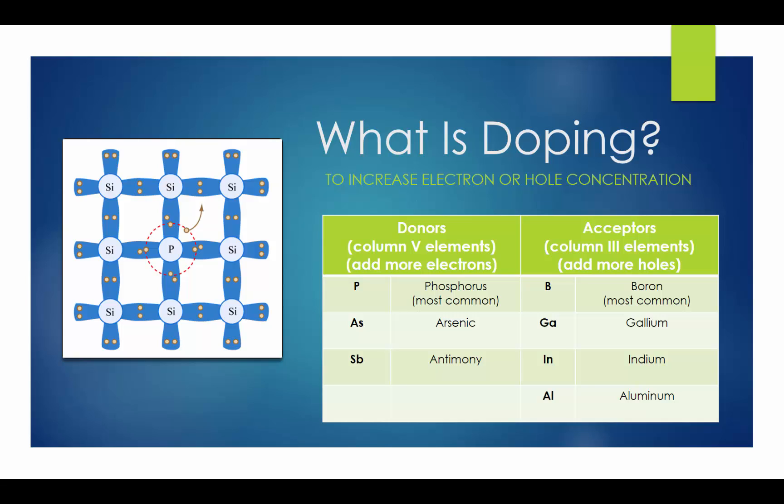Semiconductor doping is the process of intentionally adding a small percentage of foreign atoms to extremely pure intrinsic semiconductors to change their electrical properties. Even a tiny percentage doping in single crystal semiconductors makes dramatic effects. Doping is used to increase either the electron or the hole concentration.